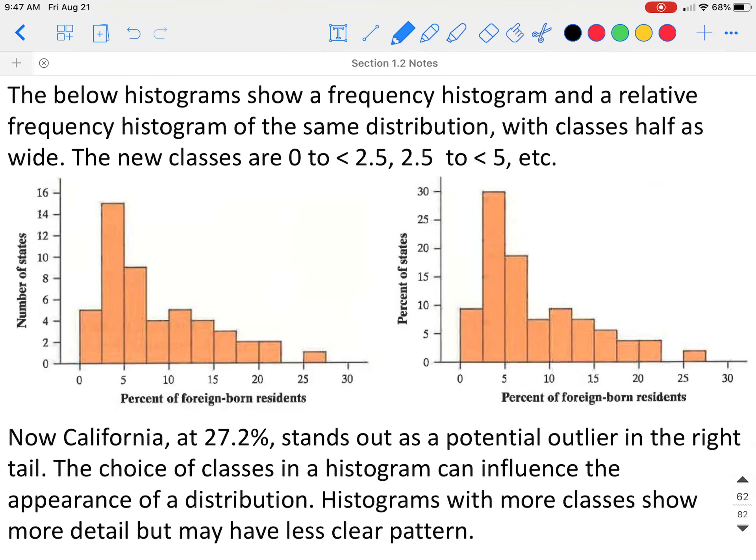The below histograms show a frequency histogram and a relative frequency histogram. A frequency histogram just tells you how frequently something happens. That's when you do a count. A relative frequency histogram tells you the percent that it is occurring of the same distribution, where classes are half as wide. So this time we're looking to go from 0 to less than 2.5 and 2.5 to less than 5. We're taking those classes and cutting them in half.